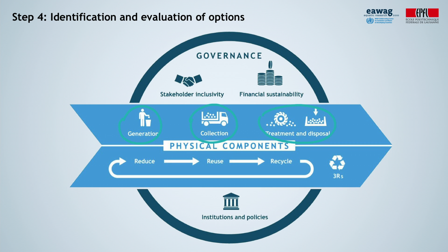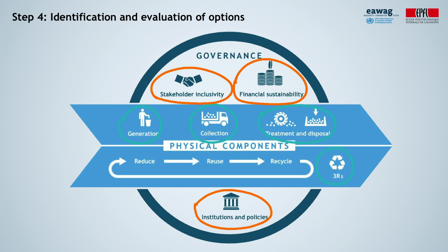disposal and RRR activities, circled in green color, as well as the governance components, including stakeholder exclusivity, financial sustainability, and institutions and policies, circled in orange color. After coming up with a list of possibilities, the stakeholders should agree on a shortlist of preferred options for each component. The outcomes of this step will be used later in step 6.